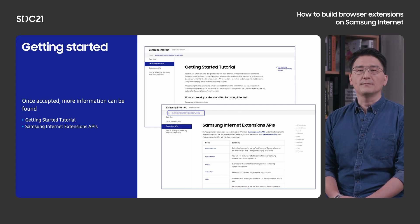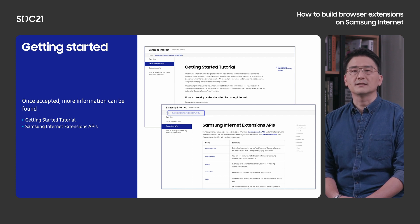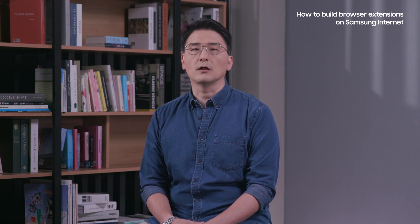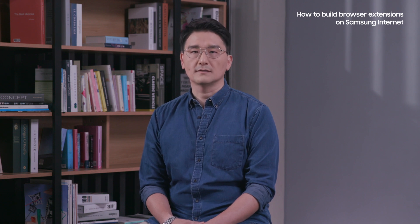You will be notified after you have been approved to join, and you will be able to find more information such as tutorials and the supported APIs list when logging back into the Developer Portal. Samsung Internet Extensions is based on the Chrome Extensions framework, so many of the Chrome Extensions APIs will already be compatible. But because Samsung Internet is a mobile browser running on mobile and tablet devices, the behaviors of some APIs may differ from your expectations. More details about the differences can be found in the Developer Portal, and you can send us your queries anytime.